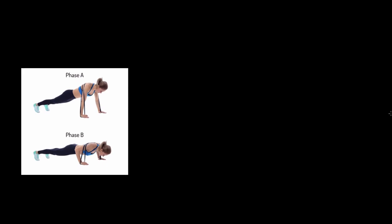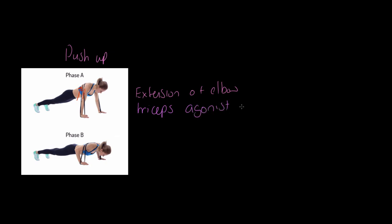Let's look at the push-up. The first phase I want to focus on is extension of the elbow. Elbow extension is taking place because the elbow is straightened out. What caused that? The tricep has had to contract and pull upwards to straighten and extend the elbow. So the tricep is the agonist or prime mover, and it is working concentrically — this is a concentric contraction, meaning the muscle is shortening.